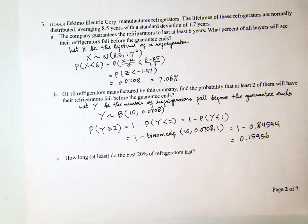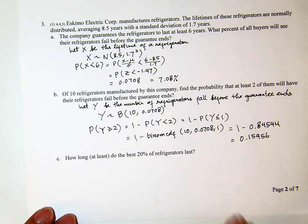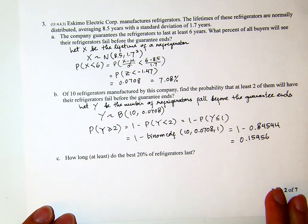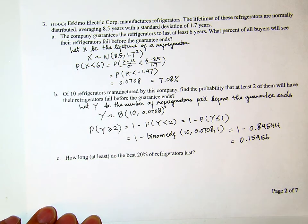That's the probability that at least 2 of them will have their fridge fail before the guarantee ends, given 10 fridges. Now Part C: how long at least do the best 20% of fridges last? The best 20% of fridges.